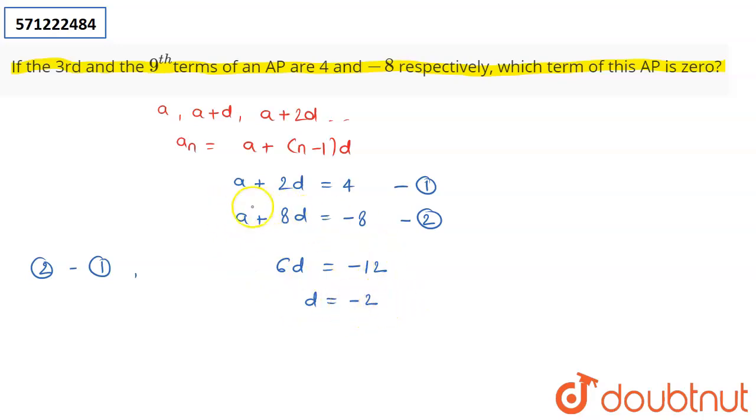Now put the value of d equals -2 in any of these and you can find the value of a. So it becomes a - 4 equals 4, or I can say that my first term is going to be 8.